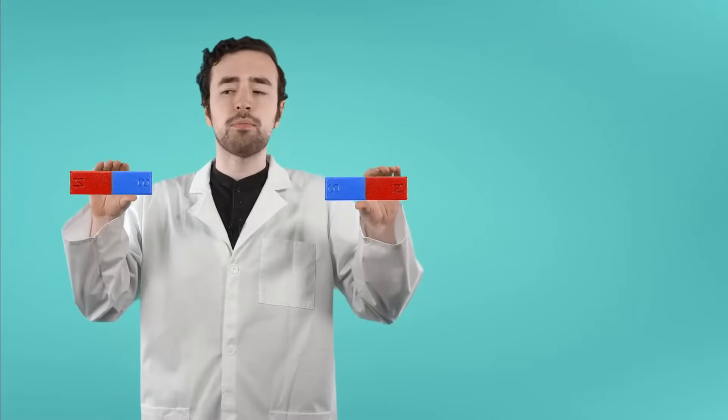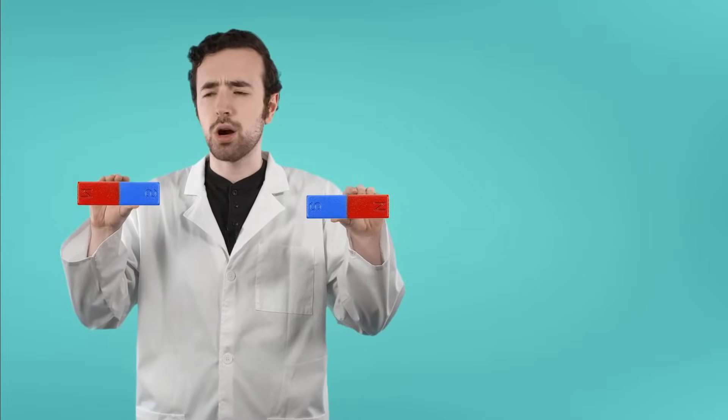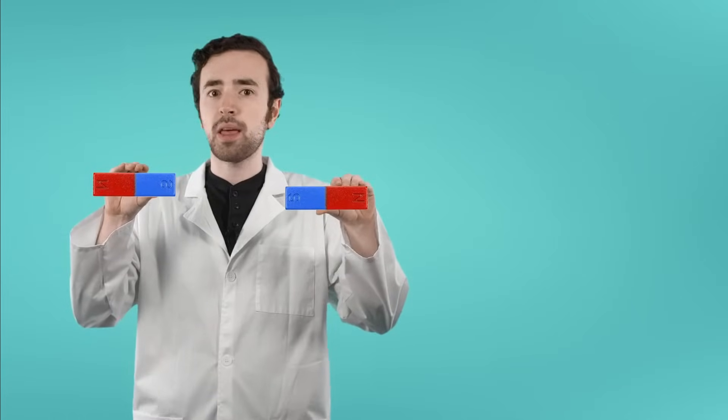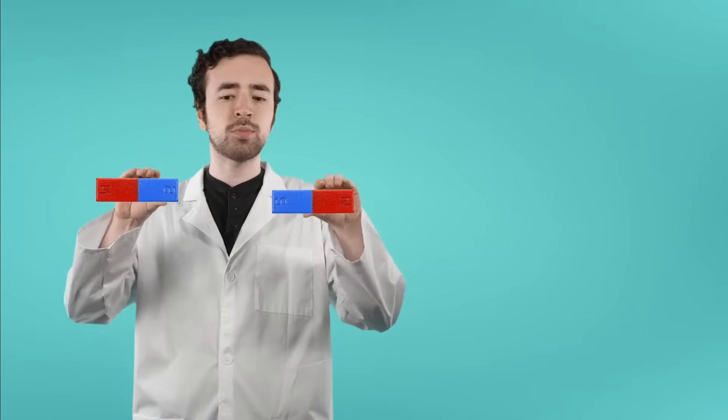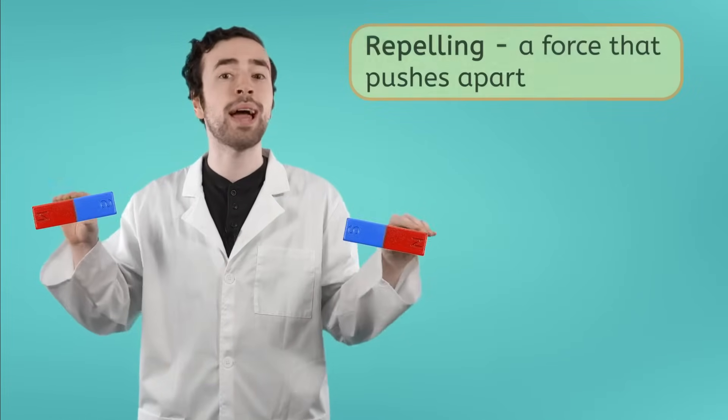You might have also noticed that magnets don't always attract things. Sometimes when you take two different magnets and try to push them together, they just won't go. It feels like there's an invisible force field between them. Well, here, the force of magnetism is actually pushing these magnets apart, or repelling them.